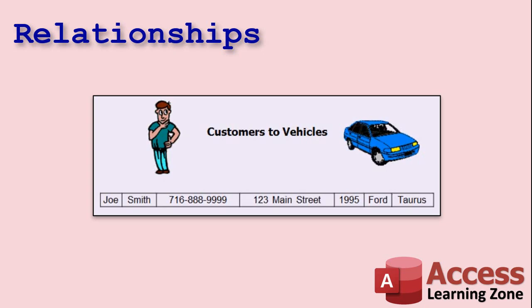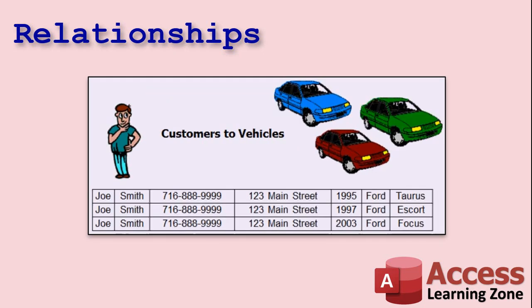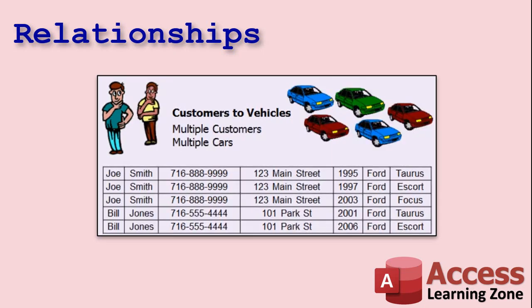Now Joe Smith buys a second car, so you've got to copy Joe Smith again — same phone number, same address — for a 1997 Ford Escort. Then a third car. As you can see, we've got a lot of duplicated information. Then I add his buddy Bill Jones, who also has two cars. You can see how much information is duplicated between records.